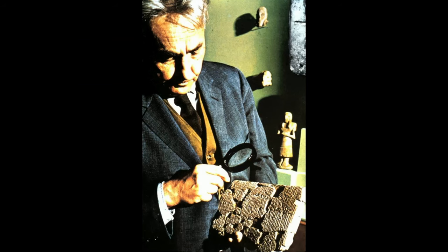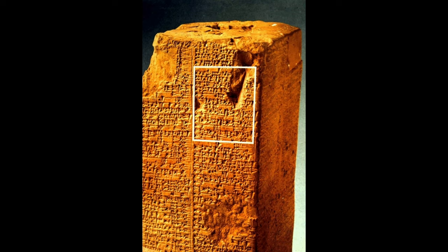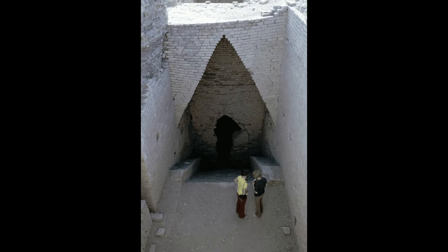Since the discovery of Ur, the name has cropped up many more times as a result of excavations. The tablet being examined here, for example, refers to Ur. On this ancient four-sided block there's a list of kings who reigned at Ur, written in the old cuneiform script. Many, many more examples could be given.